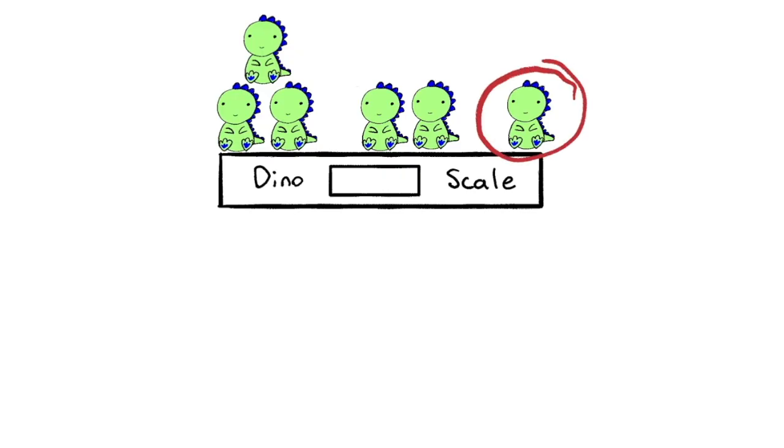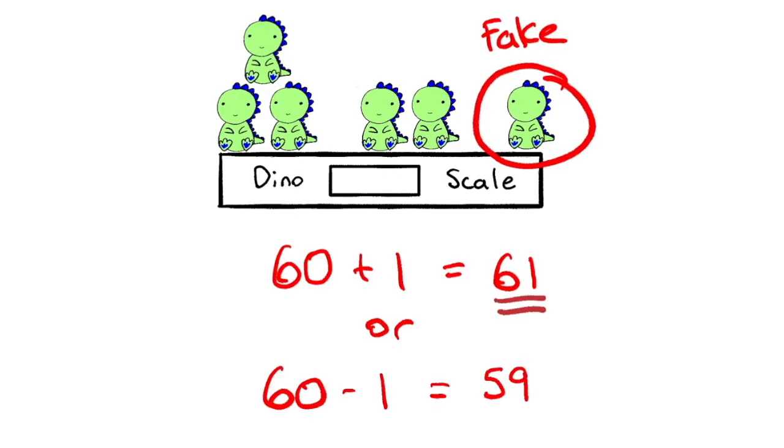And finally, if we look at the one lone dinosaur, if our scale reads 61, we know that one is one kilogram heavier and it's fake. Or if it reads 59, we know that one is one kilogram lighter and it's still fake.